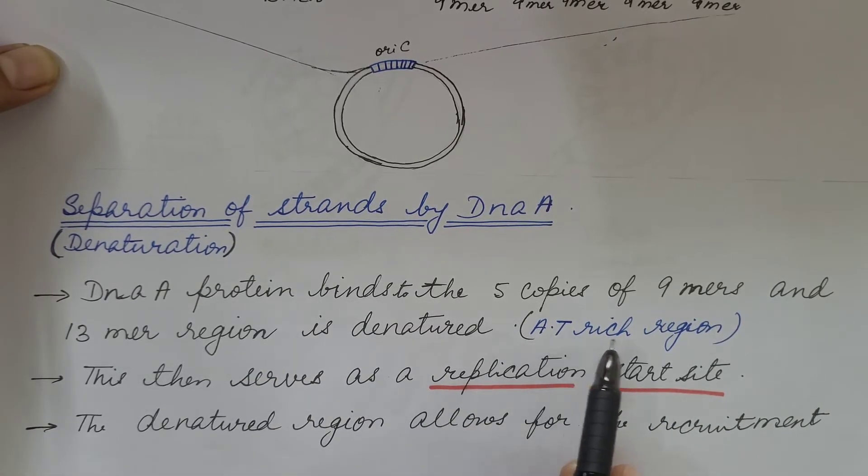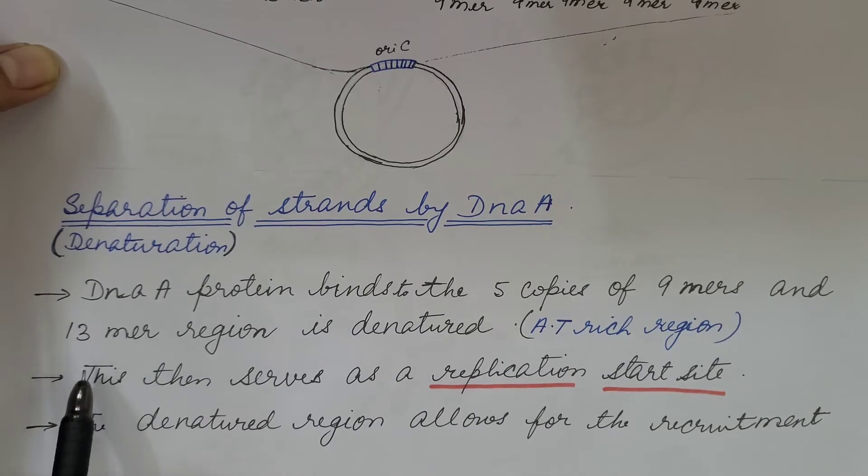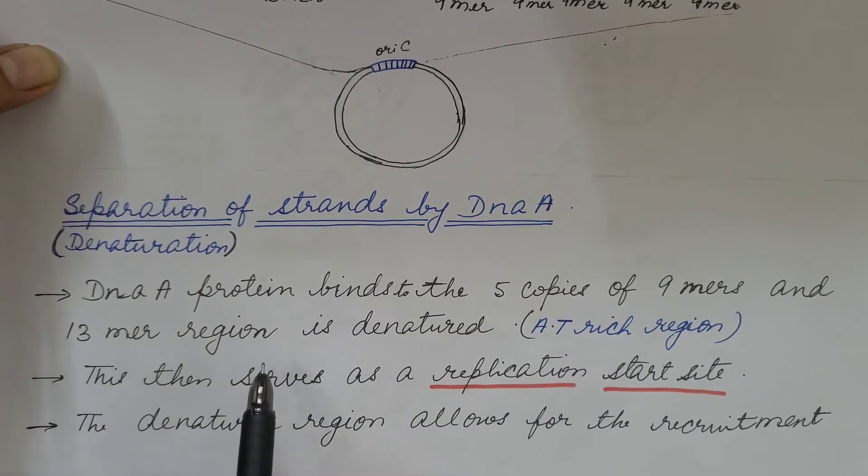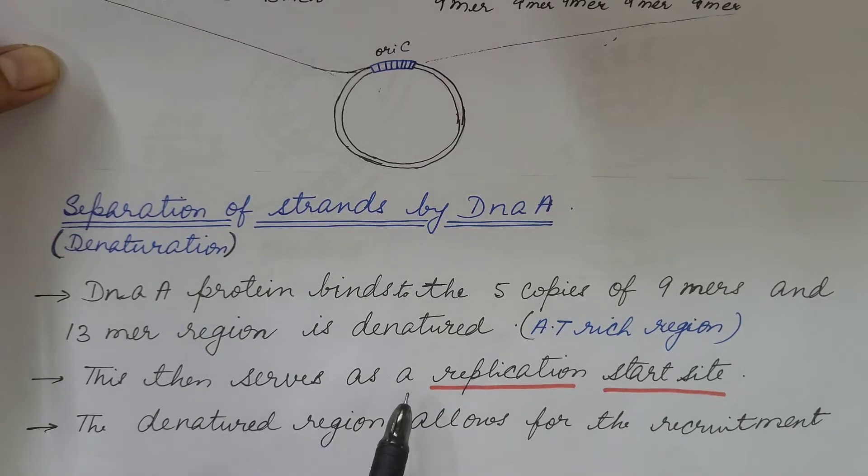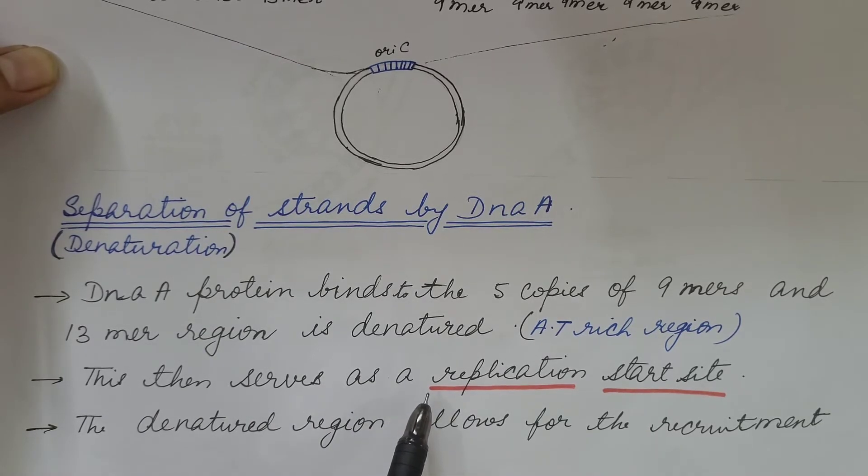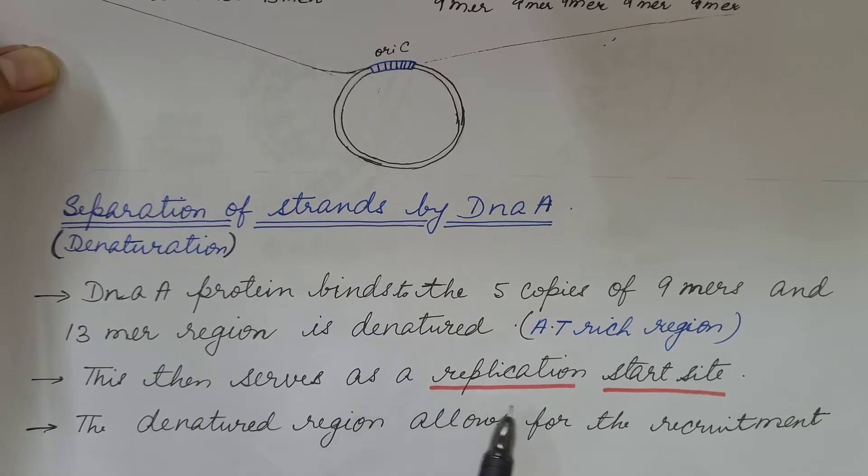This 13-mer region is AT-rich region. This then serves as a replication start site or this region where the strands separate serves as the start point of the replication.